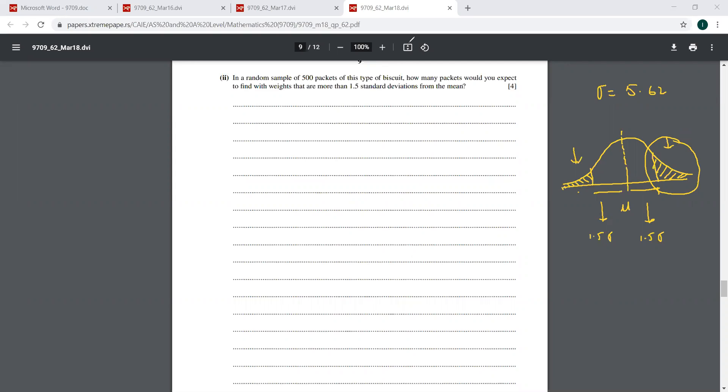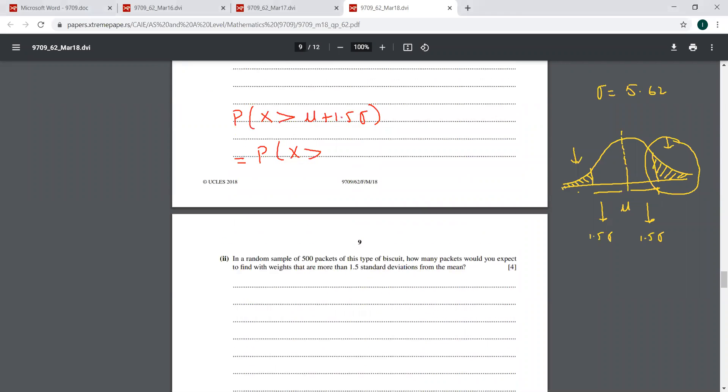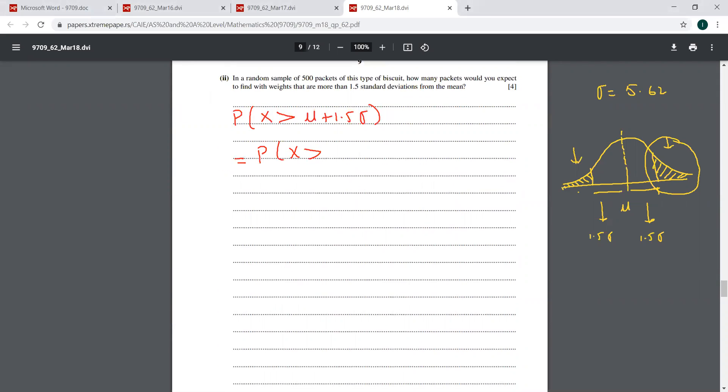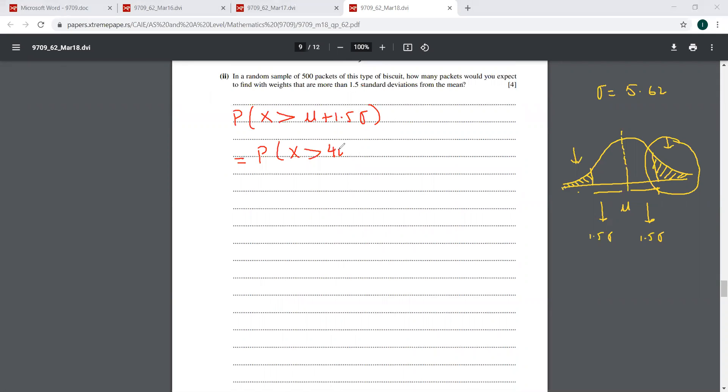So I would be writing it as that we have to find the probability that X is greater than mu plus 1.5 standard deviations. X is more than, what was that mean? 400. So the mean is 400. So this is going to be 400 plus 1.5 times 5.62.